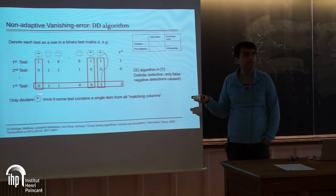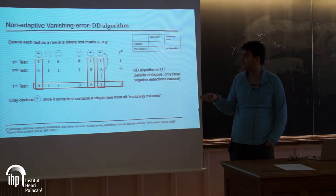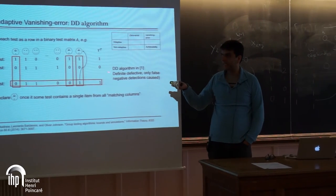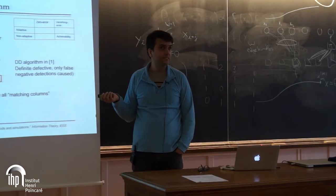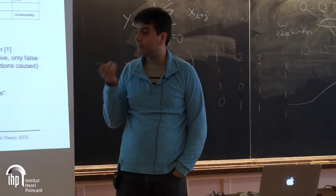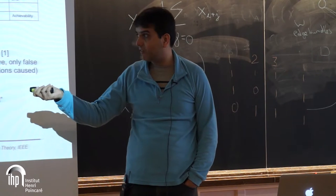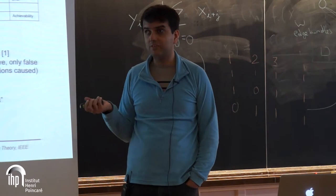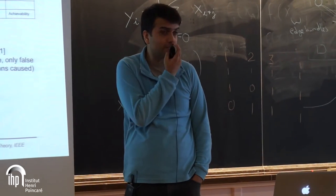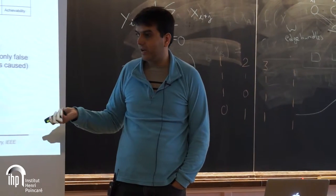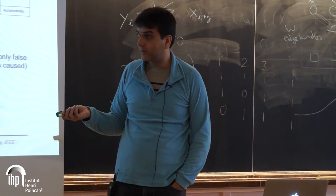There's another algorithm called DD — 'Definitely Defective.' It's like the coupon collector but with an added stage: first use negative test outcomes to identify all people who don't have the disease, then, once you've eliminated all those who definitely don't have the disease, if there's just a single item remaining in a test with a positive outcome, that person must have the disease. It's a refinement of the Sherlock Holmes approach.